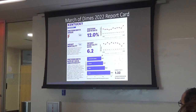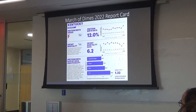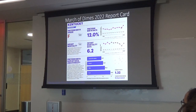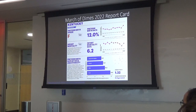In Kentucky specifically, we get an F grade with a preterm birth rate of 12%. Not only has it not improved, during the pandemic it has gotten worse. Our infant mortality rate has gotten worse, and we still have severe problems with socioeconomic disparities in pregnancy outcomes.